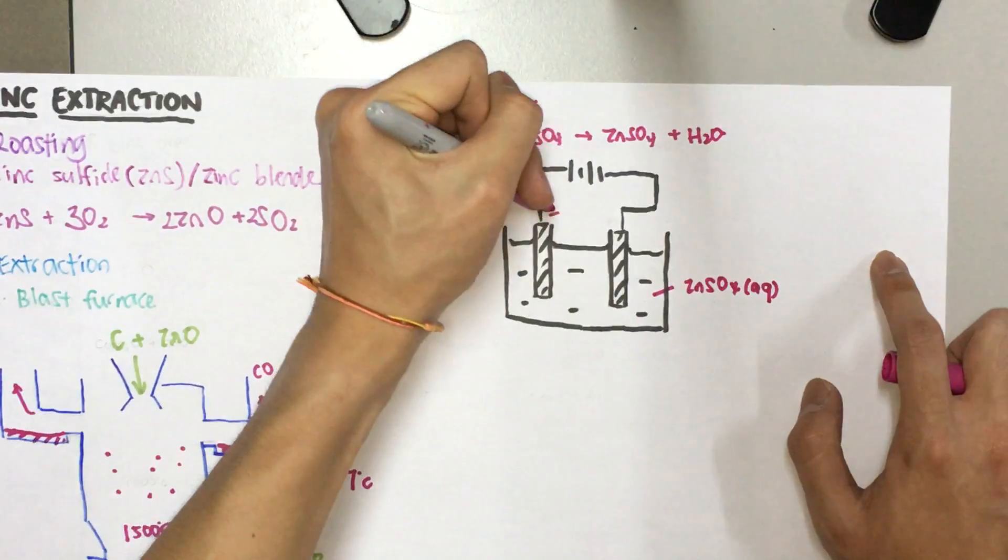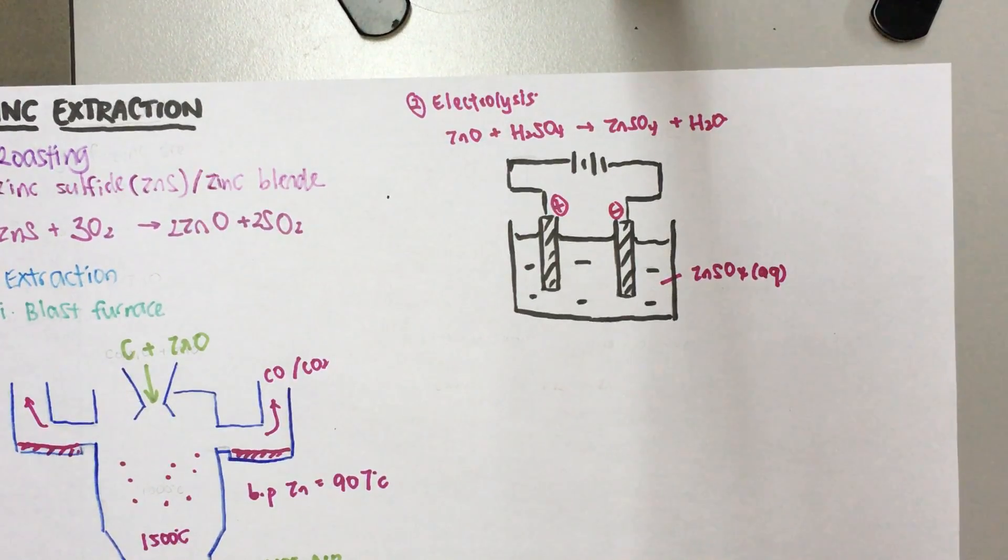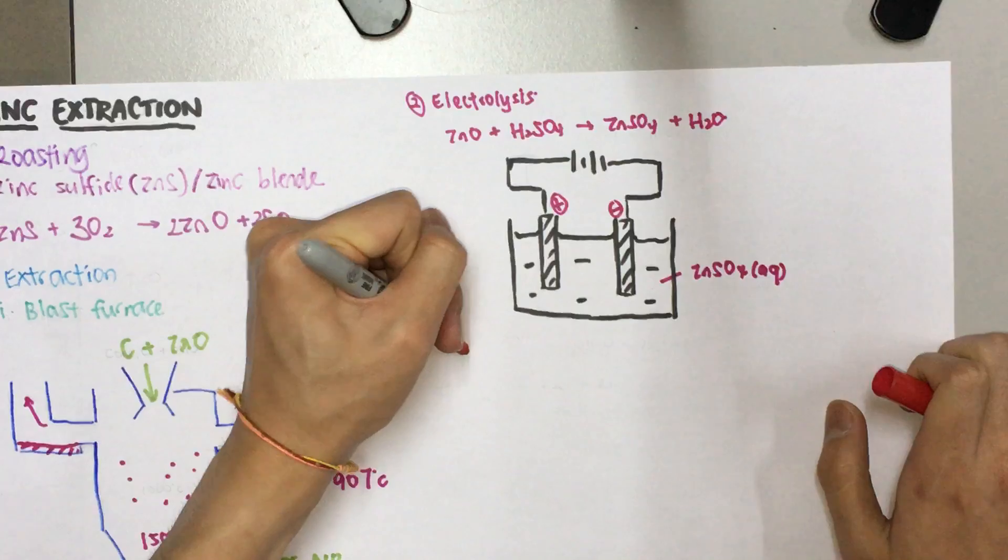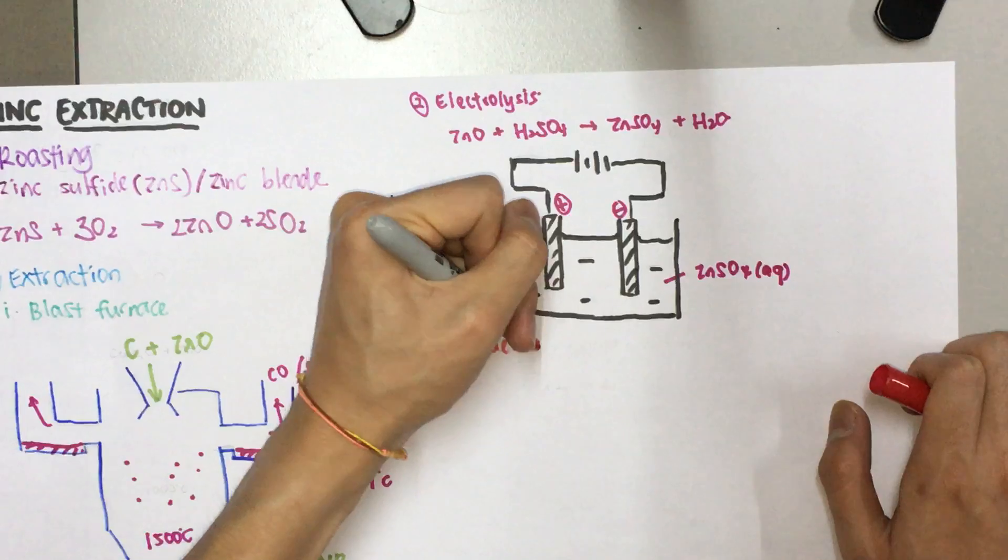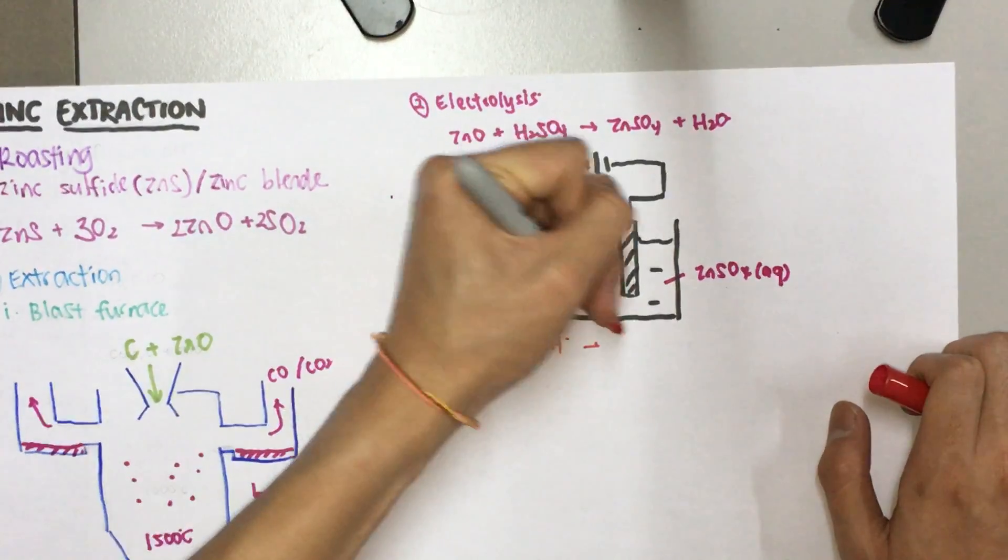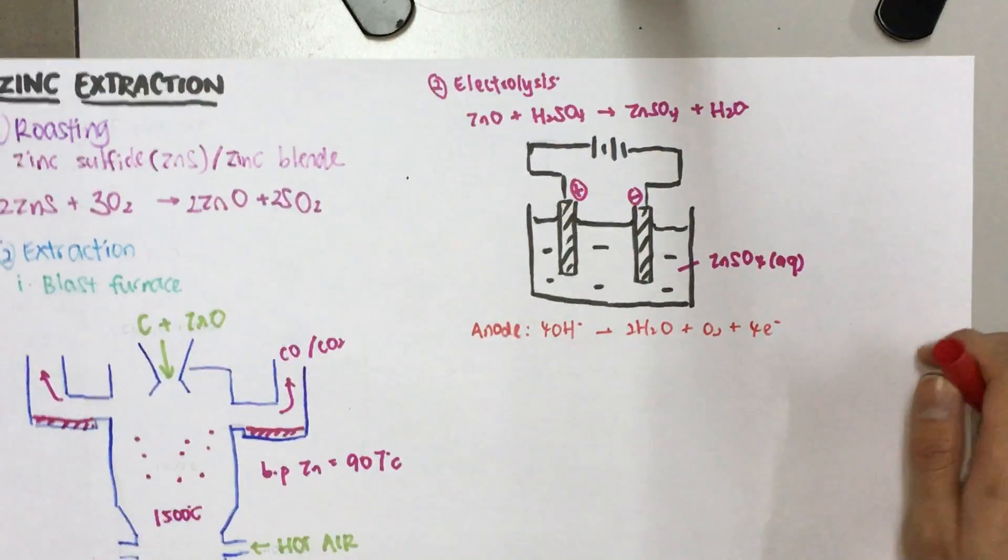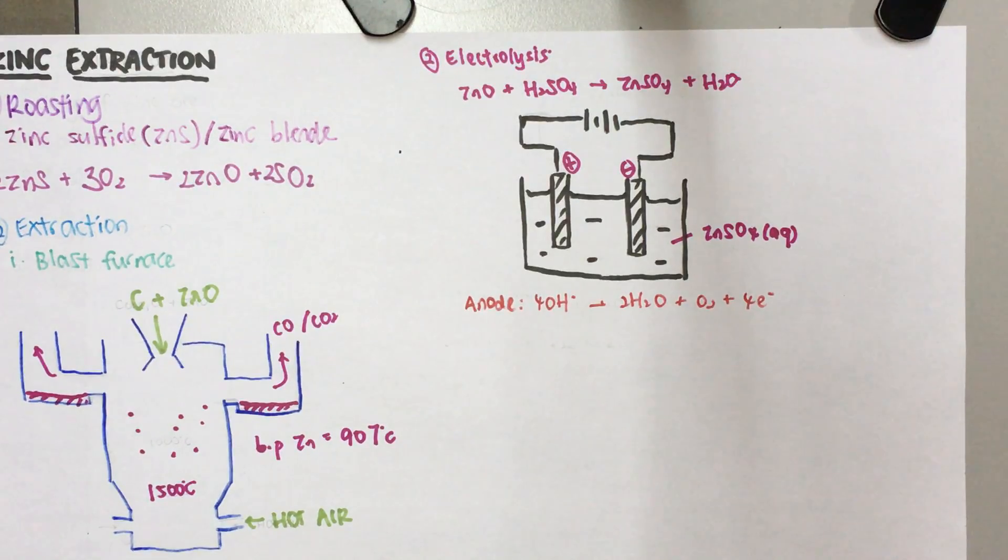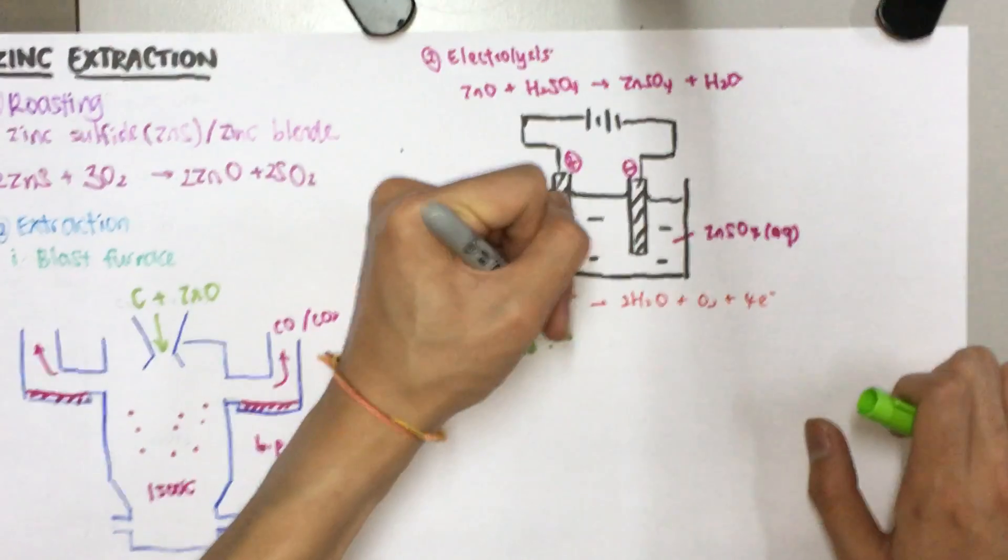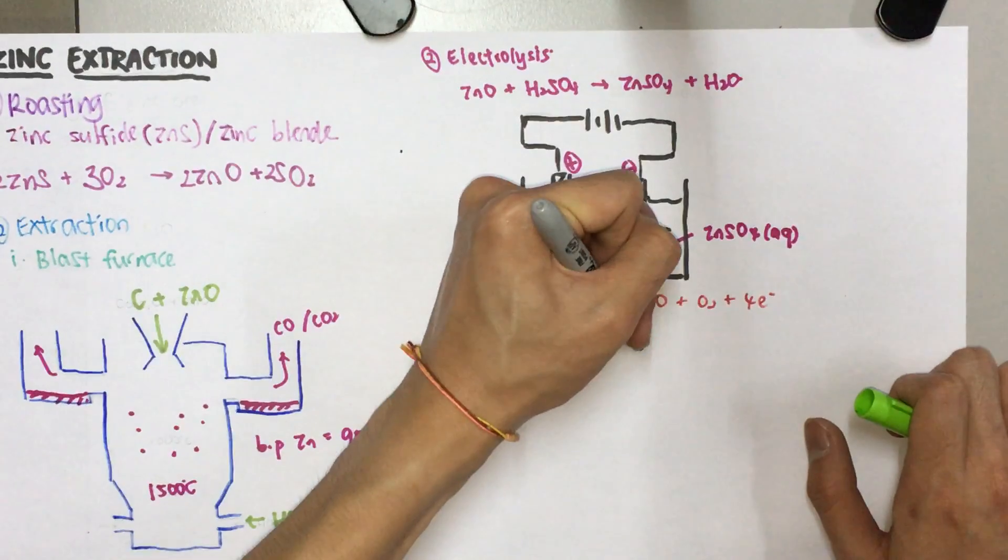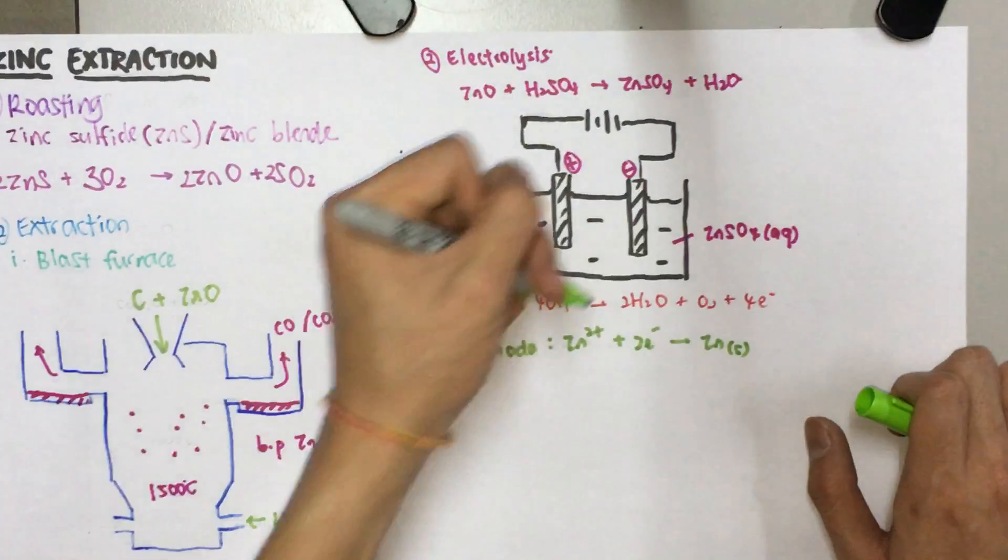You have your anode and your cathode here. At the anode, hydroxide ion is going to be discharged. So 4OH- would give you water, oxygen and electrons. Our focus here is the cathode actually, because that's where zinc is produced. Zinc ion will receive the electrons and form zinc metal, which can be collected over here.